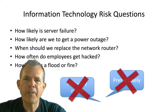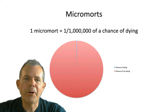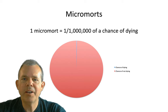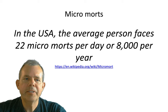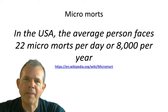Fortunately there are some statistical analyses on different things that happen in the real world. One way to look at an event in your life is called a micromort. A micromort is defined as a one in a million chance of dying — not very likely, but it's not zero. In the United States, every day as an average person you face 22 micromorts per day, or about 8,000 per year.